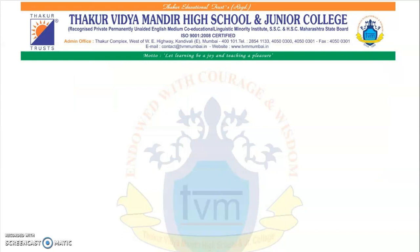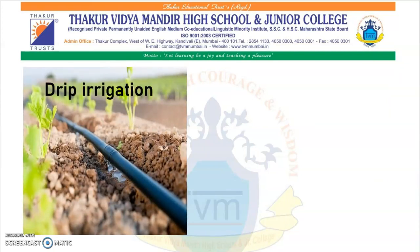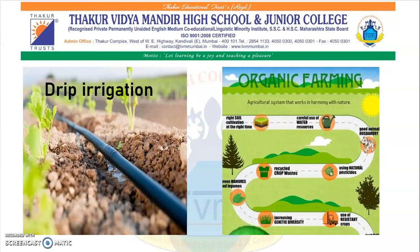One such technique is drip irrigation. As the name suggests, it is a system of crop irrigation which involves the controlled delivery of water directly to individual plants. Plants also get proper nutrition as well. Another development that is very much observed nowadays is organic farming, because more and more people are health conscious and moving towards organic food. In organic farming, less fertilizers are used, chemicals are not used — proper organic manures are used, right types of soil, recycled crop waste. This is the proper method of organic farming.